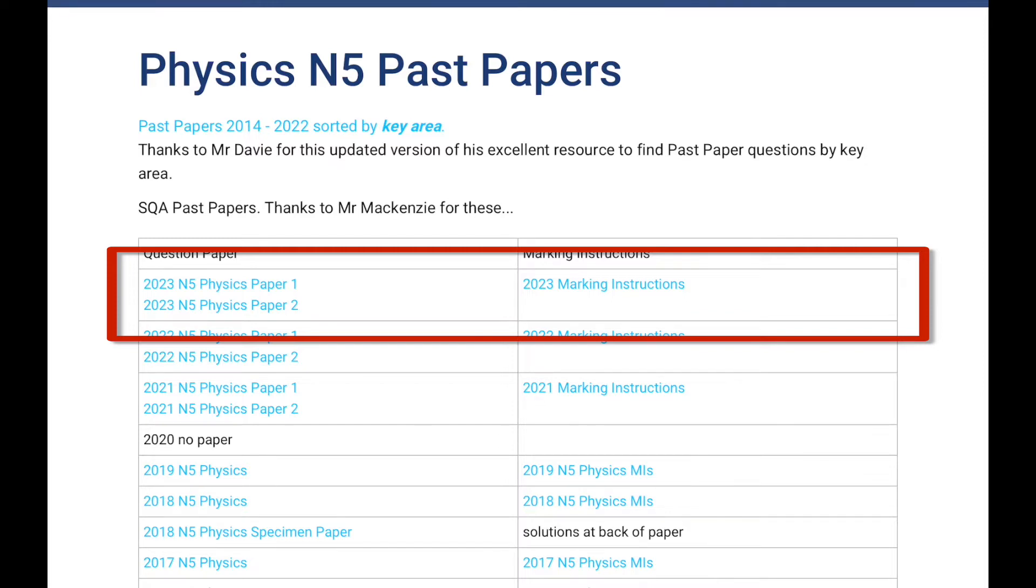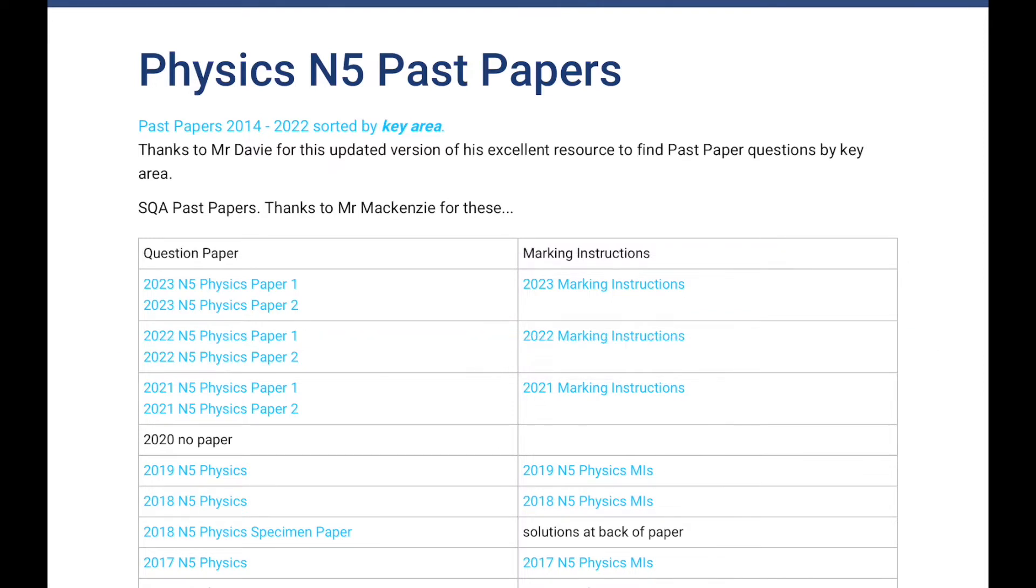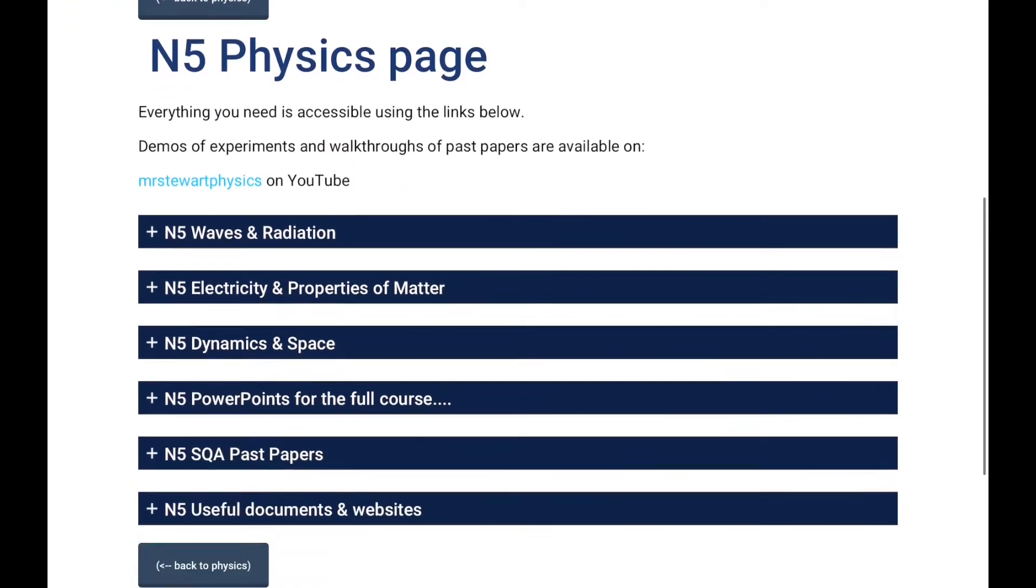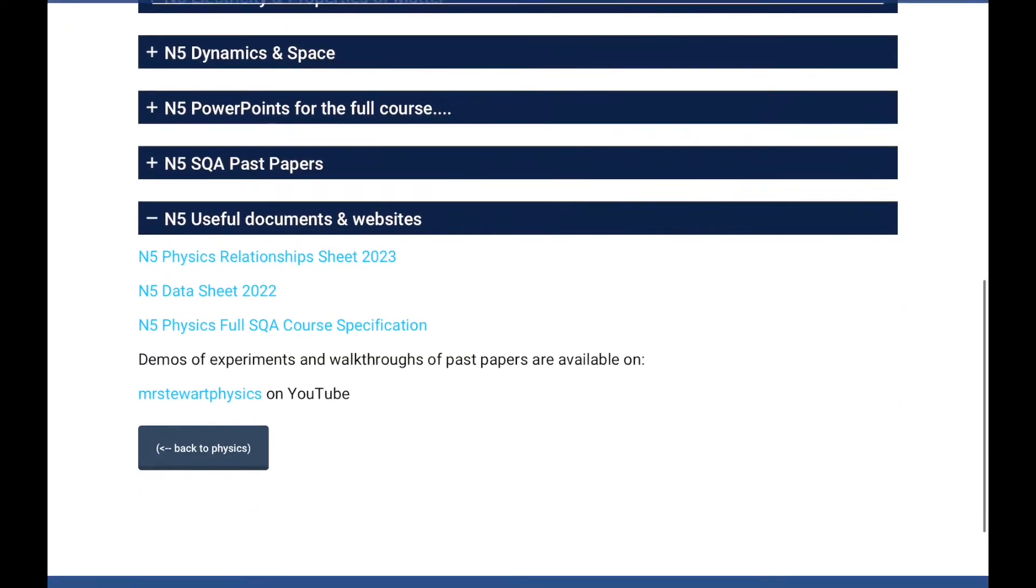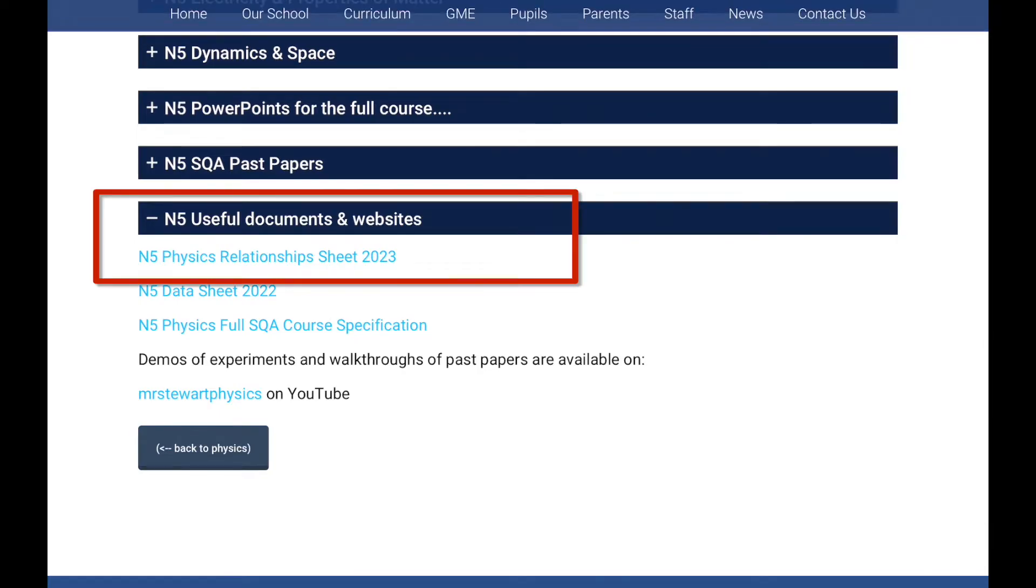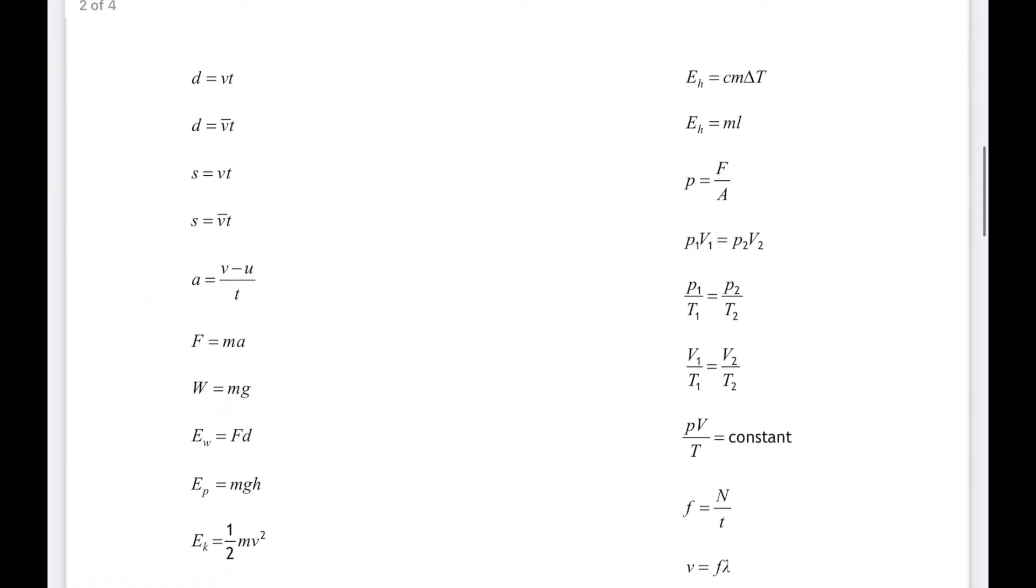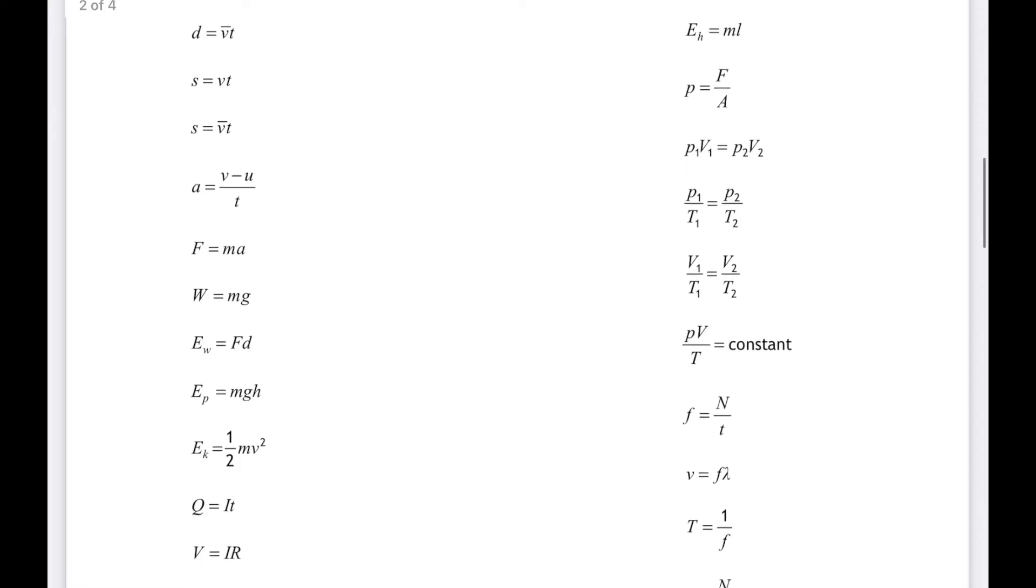There's the 2023 paper in the top row of the table there, and the marking instructions are there as well. Don't forget the other thing you need before starting any past paper is of course a calculator and the relationship sheet, which you can also get from our website under useful documents. There's the National Five relationship sheet there.